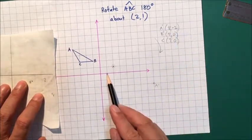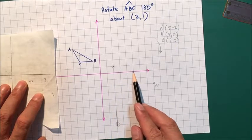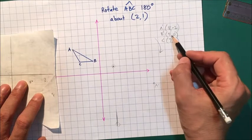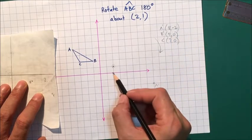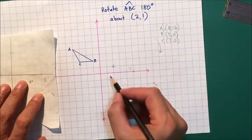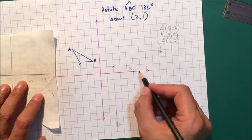So let's plot A. Just make sure it's in the right place: 1, 2, 3, 4, 5, 6, 7, 8, minus 2. So this is done. Good. 5, 0: 1, 2, 3, 4, 5, 0. So that's B. And 7, 0: 1, 2, 3, 4, 5, 6, 7. That's C dash.